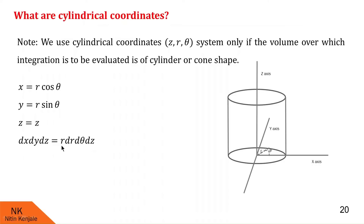I am not covering the Jacobian part in this video, but for now understand that whenever you transform the integral system from one coordinate system to another coordinate system, you have to multiply with this Jacobian in the new coordinate system's order of evaluation. Now with this amount of knowledge, let us proceed to the examples.